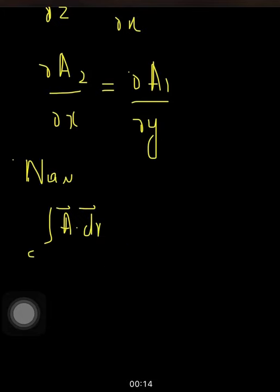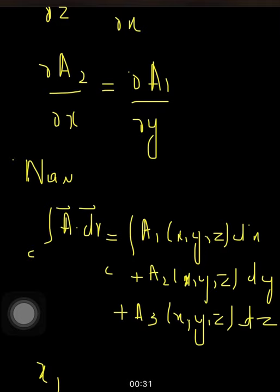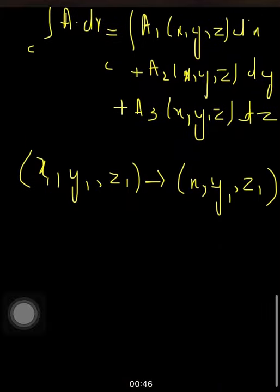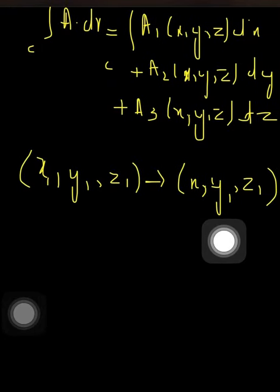The next step is to prove that A equals del φ. I write the line integral A dot dr equals a1(x,y,z) dx plus a2(x,y,z) dy plus a3(x,y,z) dz, where C is the path joining two points (x1, y1, z1) and (x, y, z).